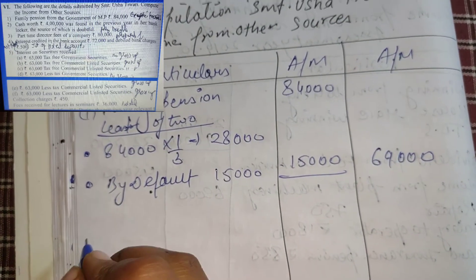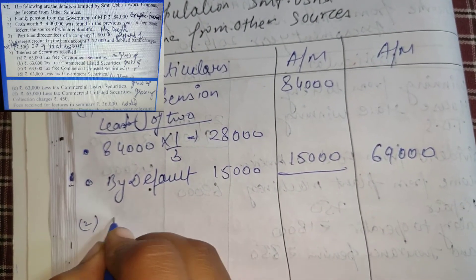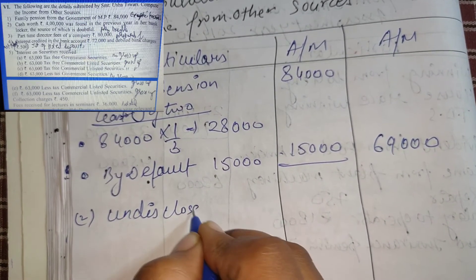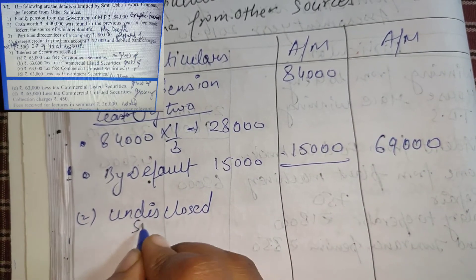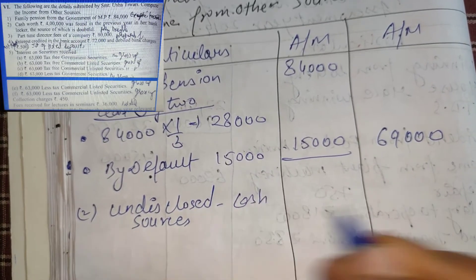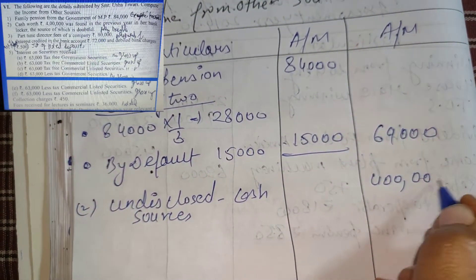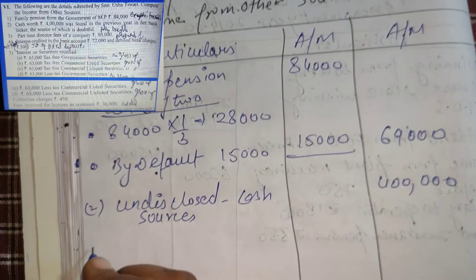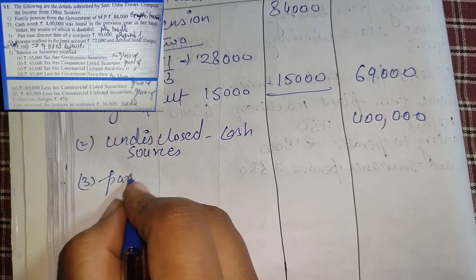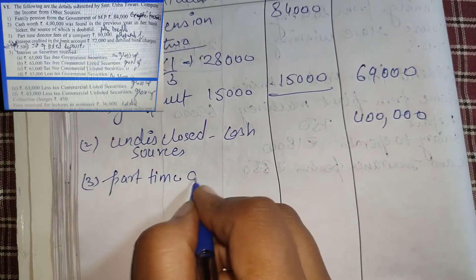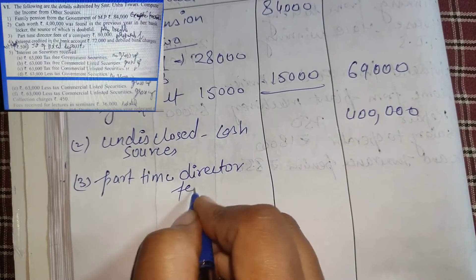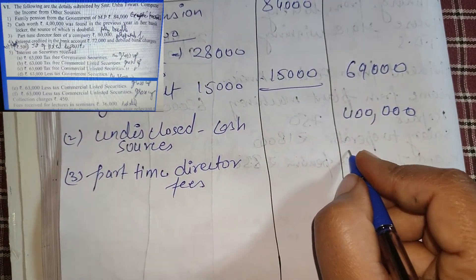Next: cash worth 40,00,000 found in the previous year in a bank locker — this is undisclosed sources. We will write it directly because it is mentioned under other sources: 40,00,000. Next, part-time director fees of a company — this is also other sources. We will write 80,000 directly.